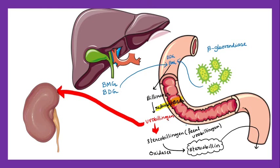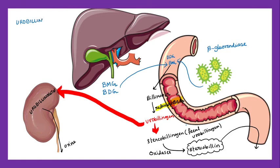The urobilinogen which goes into the kidney is excreted unchanged into the urine. This urobilinogen upon long standing gets oxidized by air and forms urobilin — that's why urine upon long standing in air gets darker in color. Similarly, the residual stercobilinogen present in fecal matter gets oxidized in air, leading to darkening of fecal matter.